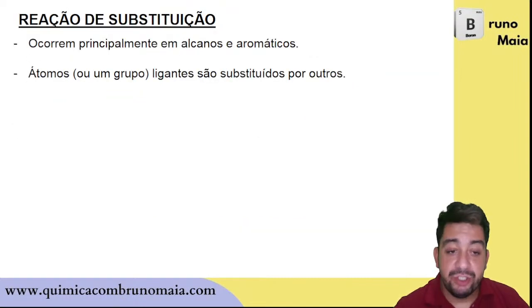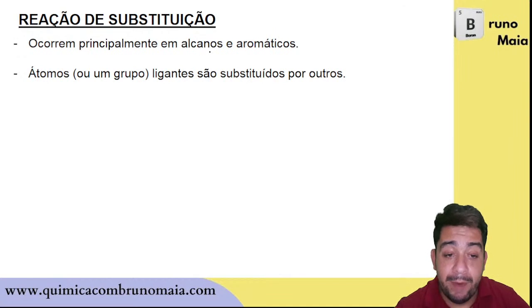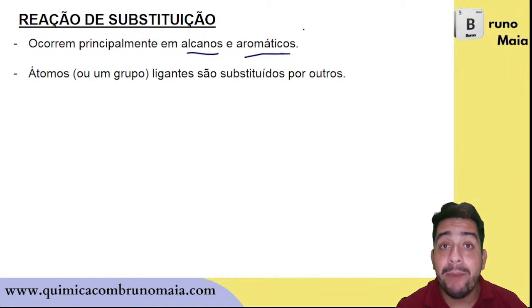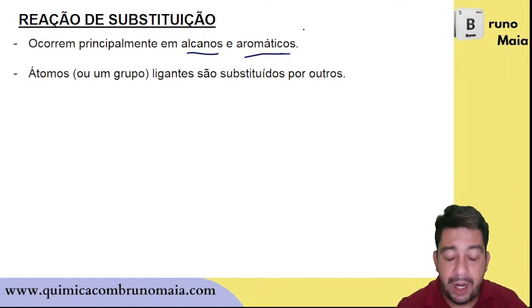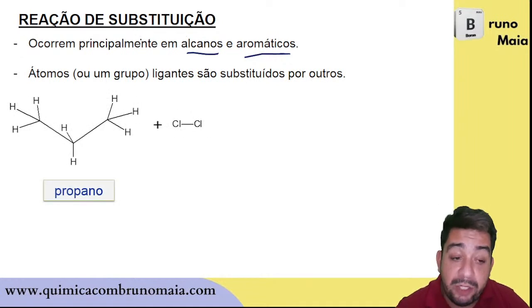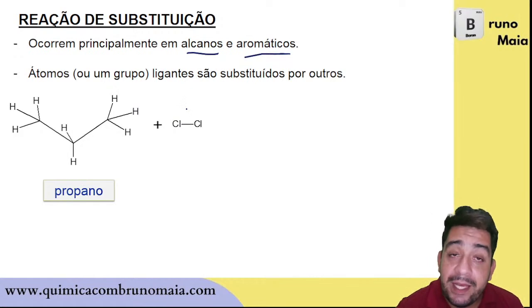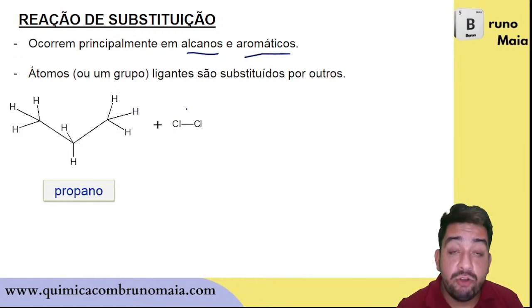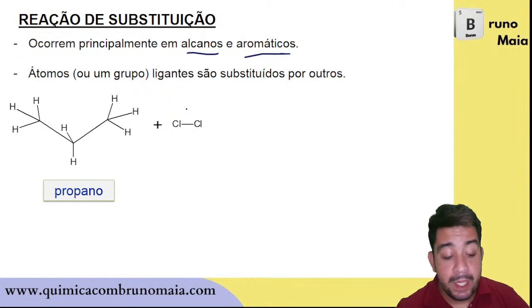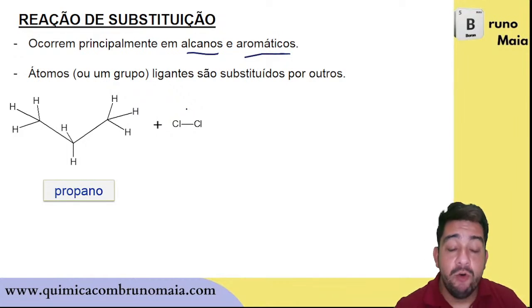Talking now about substitution reactions: they occur mainly in alkanes and aromatics. The addition reaction applied to alkenes or alkynes because the pi bond breaks and a ligand enters each carbon of the double or triple bond. Now, when I have an alkane — a hydrocarbon with only single bonds — there is no way to add those two chlorine atoms. The carbon has four valence electrons and all are already bonded.